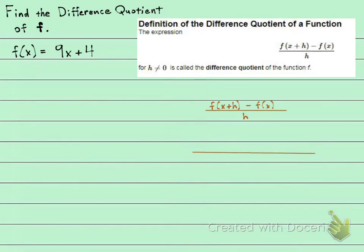So we do know the f of x. And it's very important that if I am subtracting the f of x, I need to put it in parentheses, because if it's more than one term, I'm subtracting all terms in there. So when I subtract the f of x, I'm really subtracting 9x plus 4.